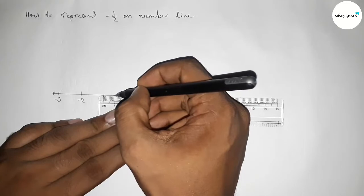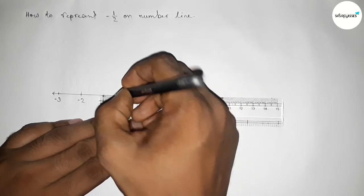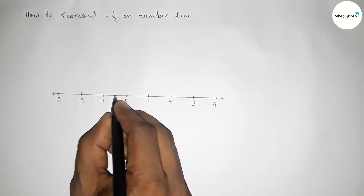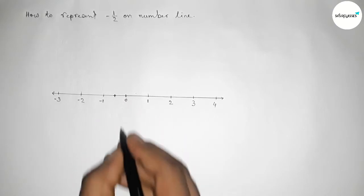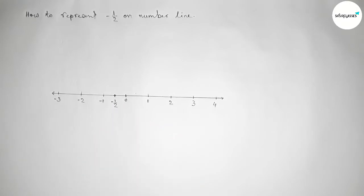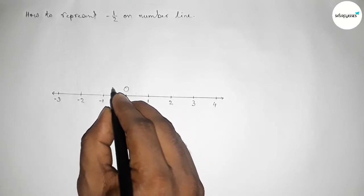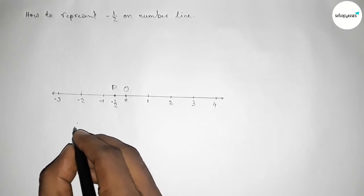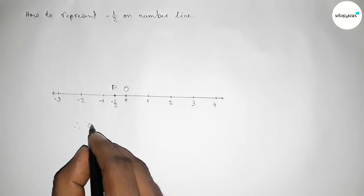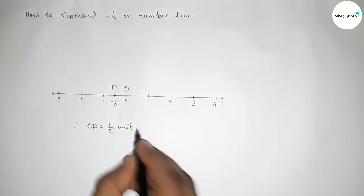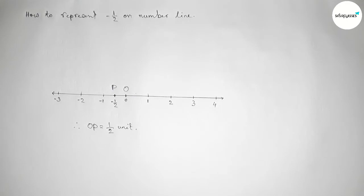Marking this deeply. So this one is minus half on the number line. Now taking point here, O, and here P. Therefore, distance OP equals to we can write 1 by 2 unit. Since the distance is always positive, so here OP equals to 1 by 2 unit.